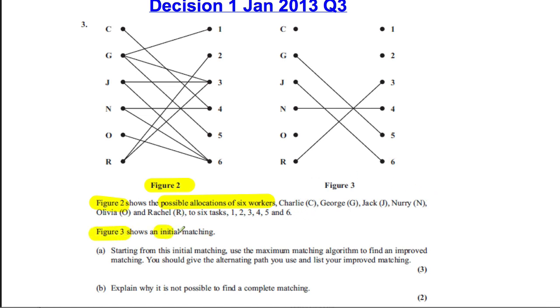Figure 3 shows an initial matching. Starting from this initial matching, use the maximum matching algorithm to find an improved matching. You should give the alternating path you use and list your improved matching. Just notice in part B it says why it's not possible to find a complete matching. Read ahead in these questions so you know when in part A you're asked to find one improved matching, not the complete matching.